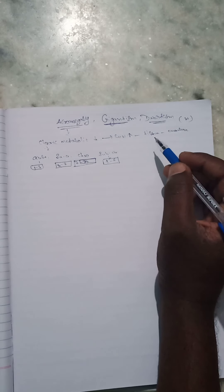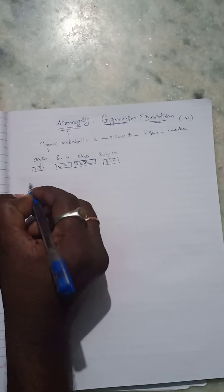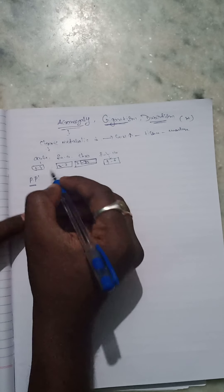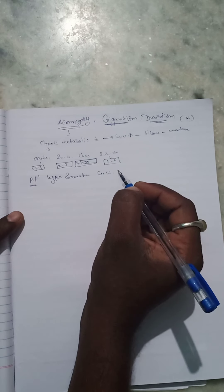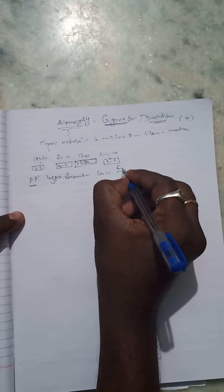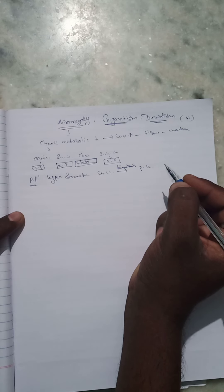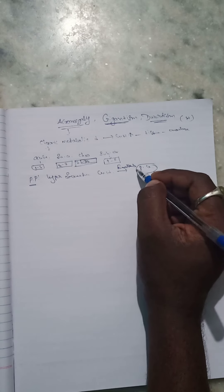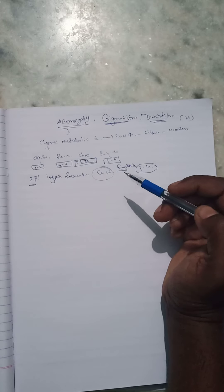Acromegaly mainly occurs in the nails, fingers, and other body parts. What is the pathophysiology of acromegaly? Acromegaly is characterized by the hypersecretion of growth hormone, which causes enhanced secretion from the pituitary tumor. In 95% of acromegaly cases, the pituitary gland enhances growth hormone, leading to hypersecretion in the body, which leads to acromegaly.